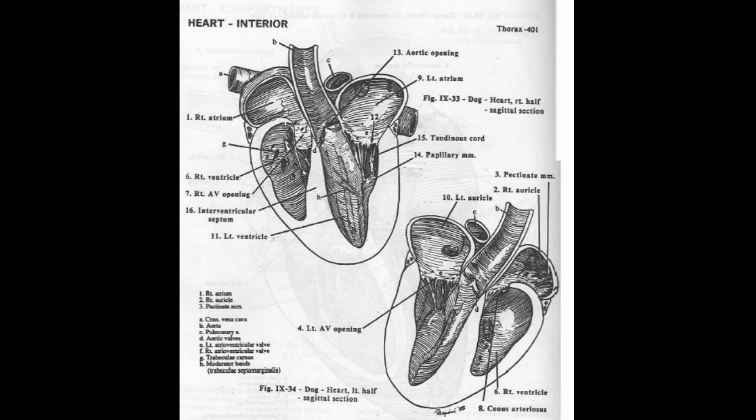When the right ventricle pumps blood via the pulmonary trunk to both lungs, the flow is guarded by the pulmonary valves, which are semilunar valves present between the pulmonary trunk and right ventricle. These semilunar valves allow blood to move from the ventricle into the trunk and prevent backflow from the pulmonary trunk back into the ventricle. Three semilunar valvulae combine to form the pulmonary valve.